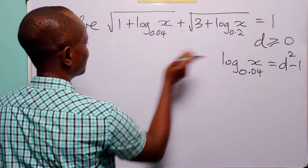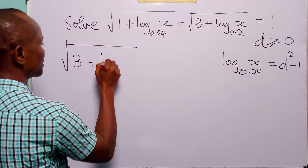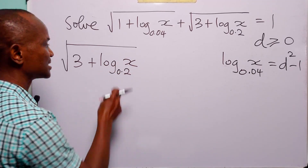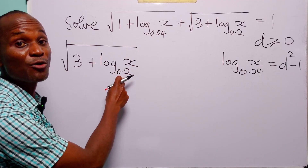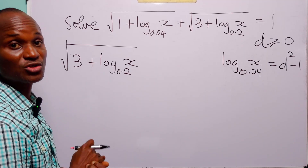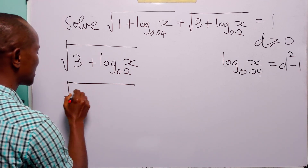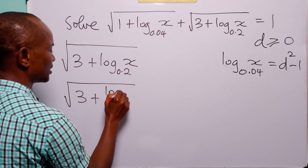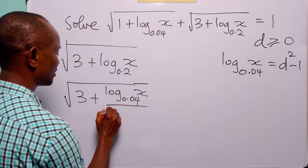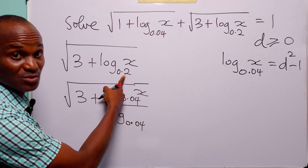Now let us look at the second term: the square root of 3 plus log base 0.2 of x. We will change the base of this logarithm from 0.2 to 0.04 using the change of base formula. When we apply that formula, we have the square root of 3 plus log base 0.04 of x divided by log base 0.04 of 0.2.